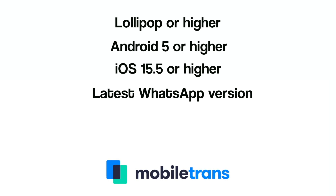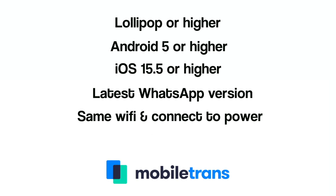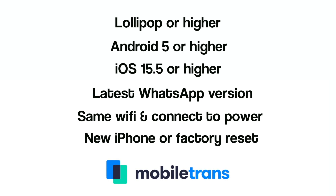You also need to make sure you have the latest WhatsApp versions on both your iOS and Android devices. Connect both devices to the same Wi-Fi network and plug them into a power source. Make sure your iPhone is brand new or reset to factory settings, and ensure that the phone number on your old and new phones is the same.